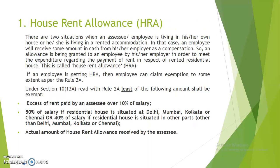In this video we will discuss only about house rent allowance. There are two situations: when an employee is living in his or her own house, or living in rented accommodation. An employee receives some amount in cash from the employer as compensation — an allowance granted to meet the expenditure regarding payment of rent in respect of a rented residential house. This is called house rent allowance. If an employee is getting HRA, the employee can claim exemption to some extent as per Rule 2A under Section 10, subsection 13A, read with Rule 2A.